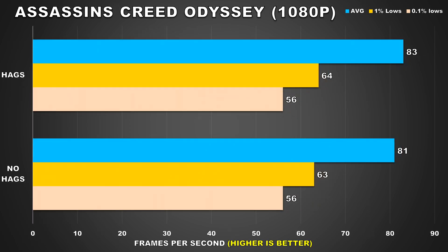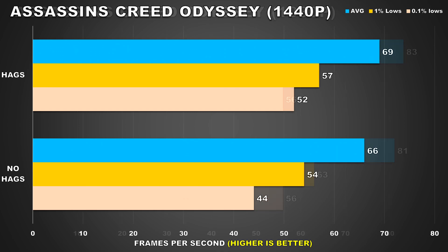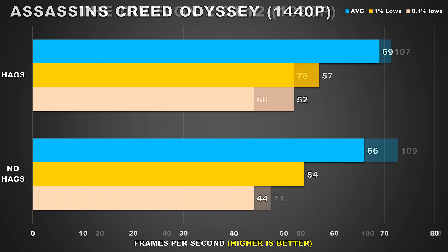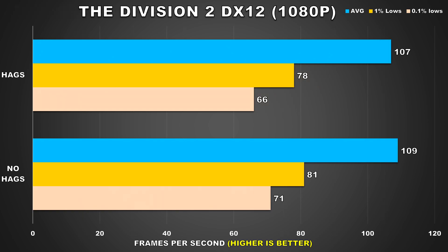Assassin's Creed Odyssey is up next — a pretty demanding open world title. At 1080p, performance between the two configurations is within margin of error. When bumping up to 1440p, the average framerate and 1% lows are relatively the same. We do see a slight bump in the 0.1% lows with HAGS enabled, but it's not something to write home about.